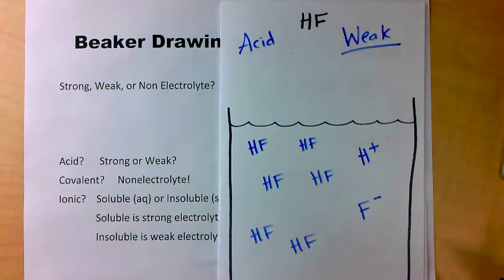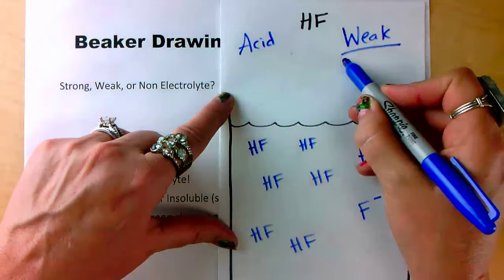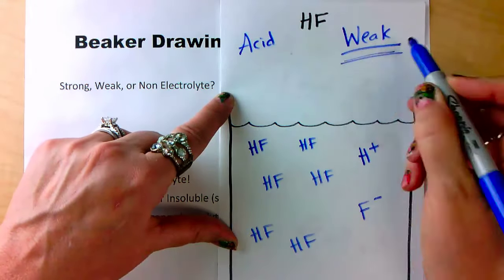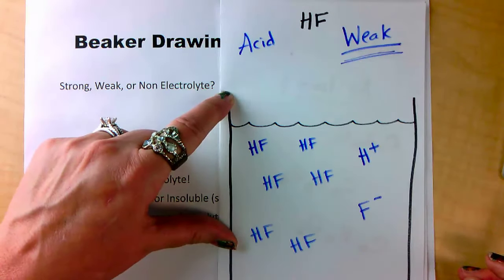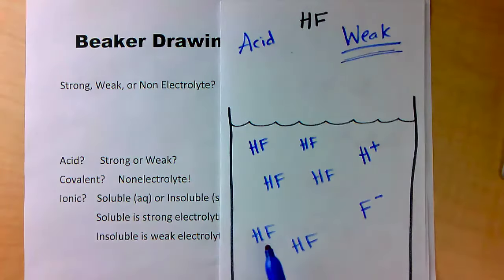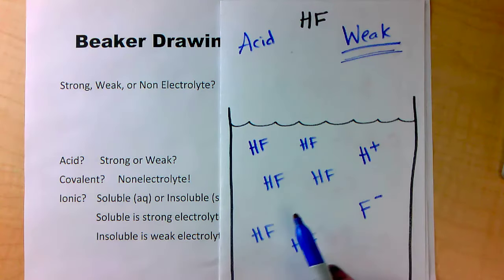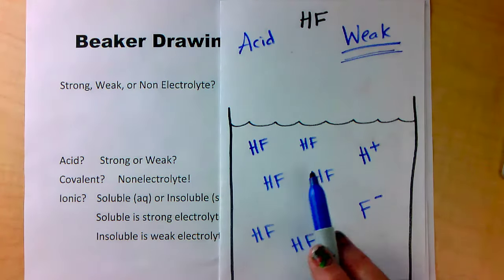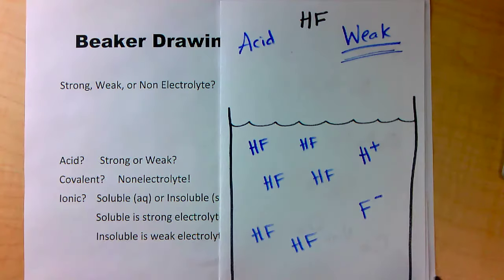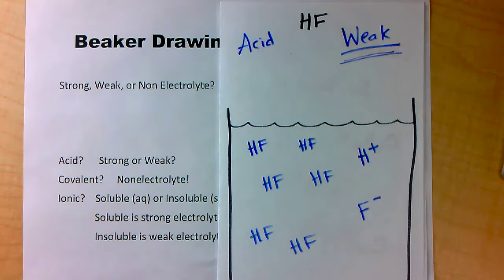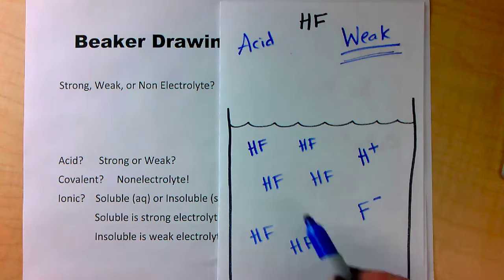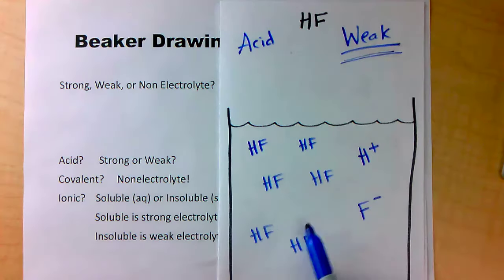HF is a weak electrolyte and a weak acid. Most of the compound stays together as molecules, and only one breaks apart. A weak acid looks like this: most of it floats around together in solution; just draw one apart.